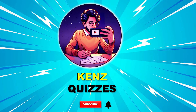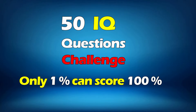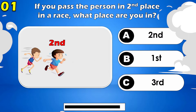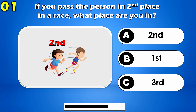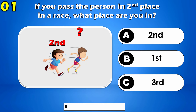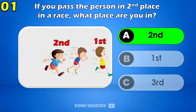Welcome back to Ken's Quizzes. 50 IQ Questions Challenge — only 1% can score 100%. First question: if you pass the person in 2nd place in a race, what place are you in? The answer is 2nd.